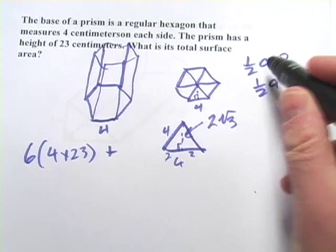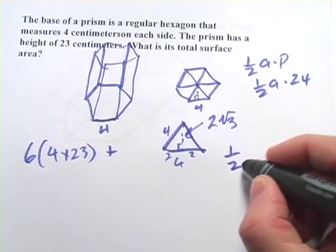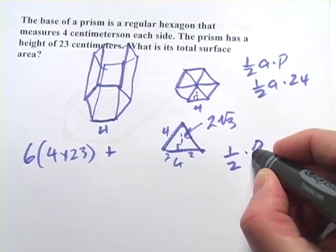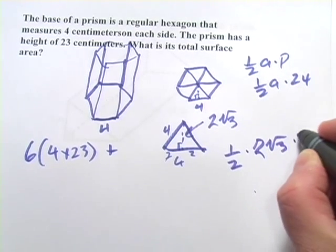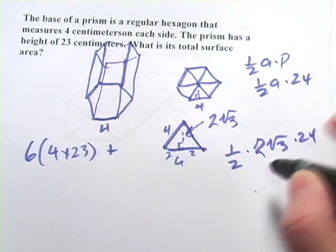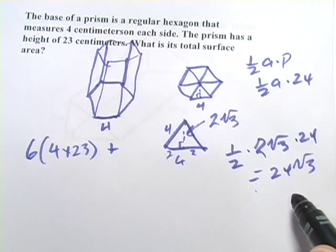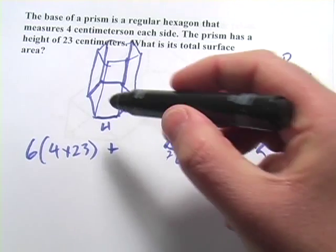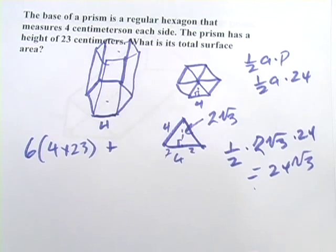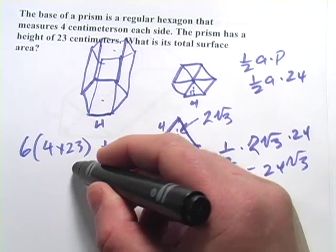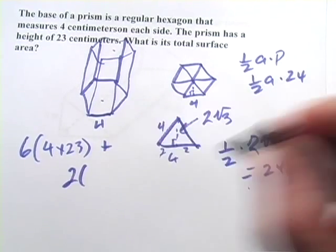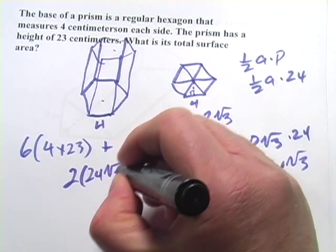All right, let's plug this into our area formula. So 1 half times 2 times the square root of 3 times 24. That's going to equal 24 times the square root of 3. Now that's the area of one of these hexagons. Well, we've got one on the bottom and one on the top. So multiply that by 2. So we get 2 times 24 times the square root of 3.